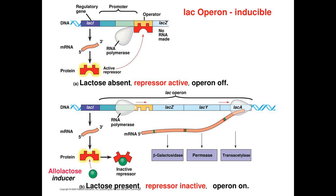Since repressor proteins are always present, the cell is able to alter its own gene expression very quickly. When lactose is added to an E. coli culture, the intracellular beta-galactosidase enzyme content increases 1,000-fold within 15 minutes. For the lac operon, allolactose is called an inducer, since it induces gene expression by disrupting the repressor. This makes the lac operon an inducible operon.